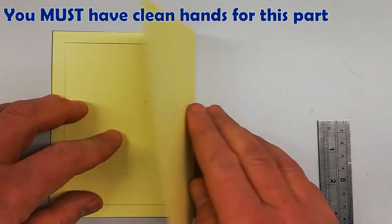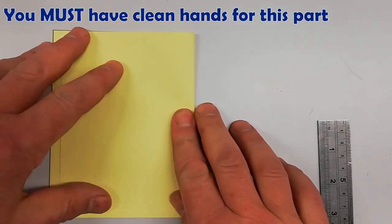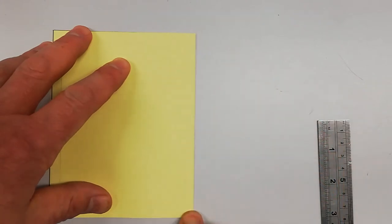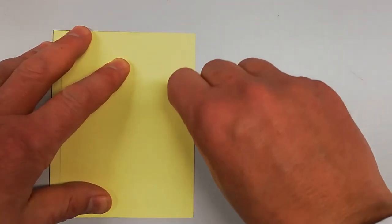Remove the ruler and fold the page right the way across. Using a clean finger, push down on the crease to make it nice and sharp.